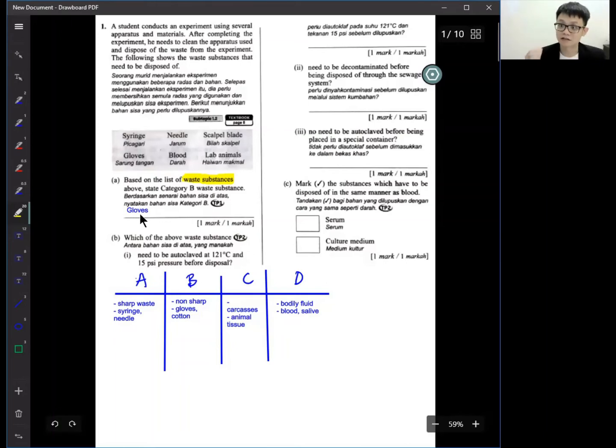So for this one mark it will be glove because glove is a non-sharp thing. Part B: which of the above waste substances need to be autoclaved at 121 Celsius and high pressure before disposal? Even though you don't know what is the word autoclave, logically if you can think we need to make the thing as hot as 121 degrees and put high pressure. The reason from here we can guess probably 121 Celsius the microorganism will die, the bacteria also will die.